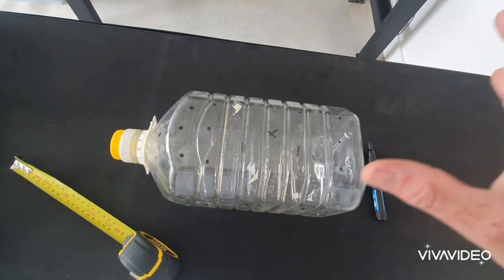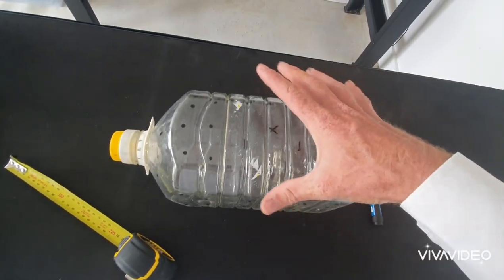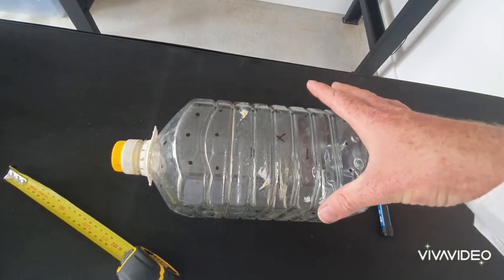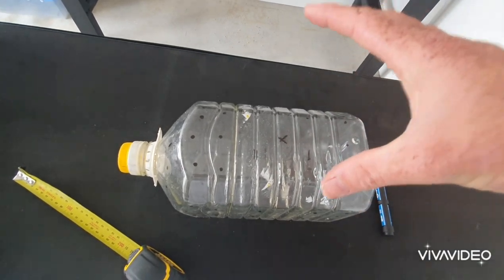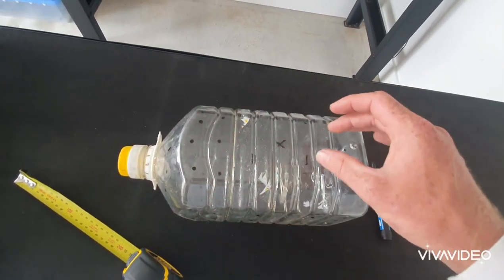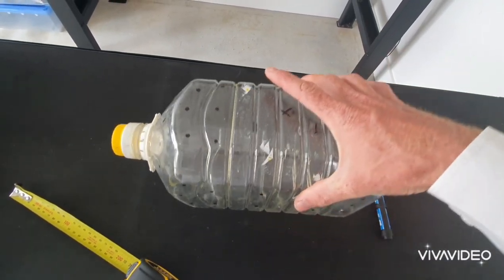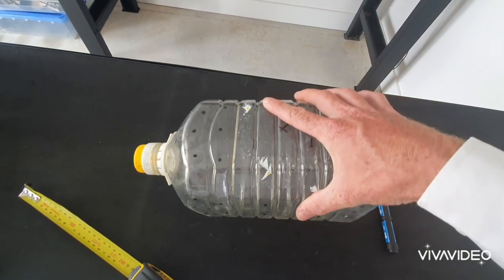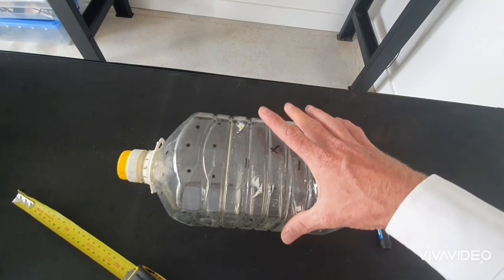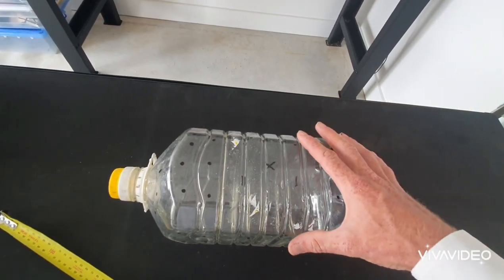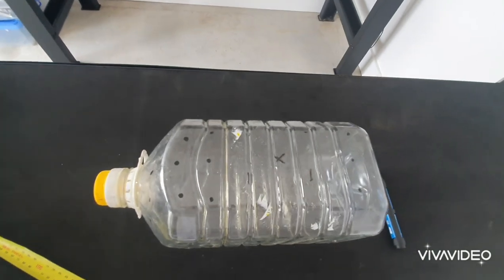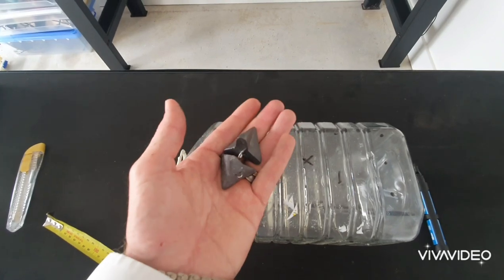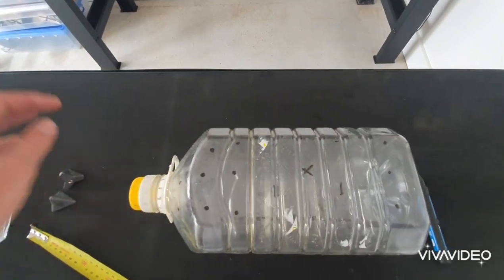When you put the trap in the water, there's so much air in the bottle. As you submerge it, if you've got enough holes, all those air bubbles will start coming out and the trap will sink. You don't want it to float—you want it to sit on the bottom. I've got another little tip: I'll also add star sinkers inside.